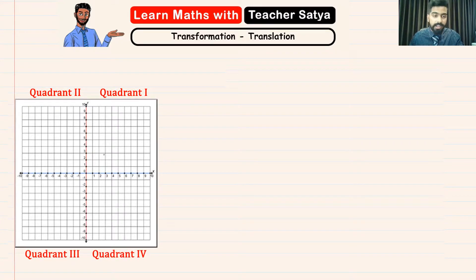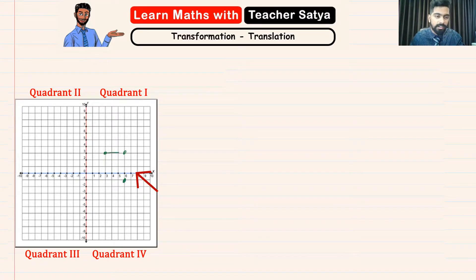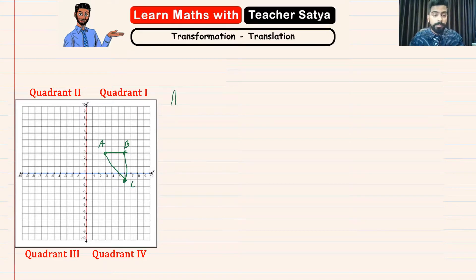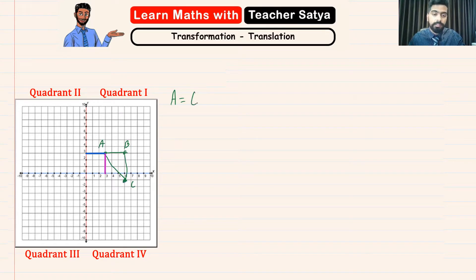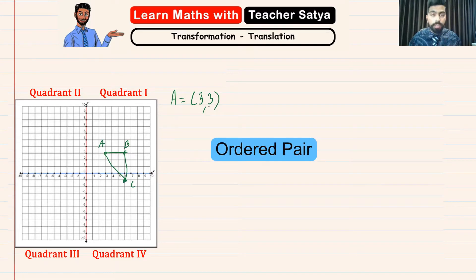Let's say I'm going to draw a triangle right here with these three points. Let me name this as point A, point B, and point C. So step number one, let us write where point A is. Point A is going 3 in the x-axis and 3 in the y-axis, so point A is located at (3, 3). This is what we call the ordered pair.